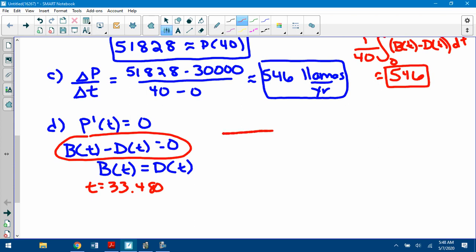Then if you want the absolute min and max, you have to make a table. And you don't just check the critical point. You also check the endpoints. So, 0 and 40. Now, do we know the population at 0? We do. It's 30,000. Do I know the population at 40? I do. It's 51,828.